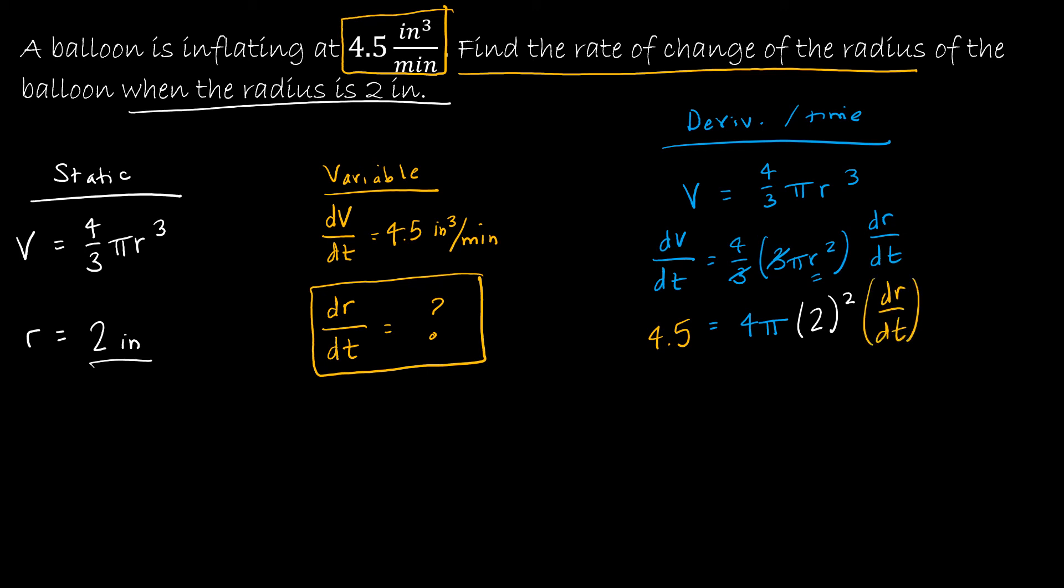So let's simplify a little bit more. On the left I have 4.5. On the right I have 4 times pi times 2 squared. Remember to square first, so 2 squared first, which is 4. And then times the 4 pi is 16 pi. And then dr over dt, which of course is what I'm solving for. And so I end up with 4.5 divided by 16 pi is dr over dt.